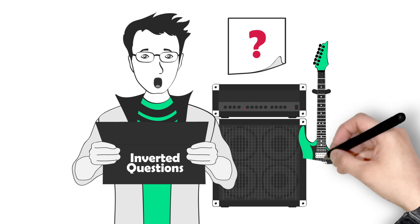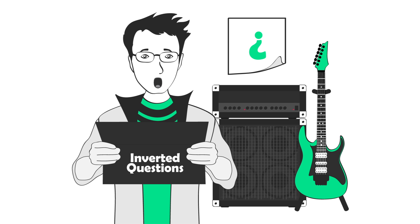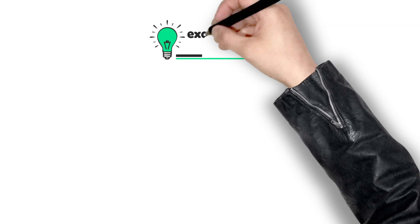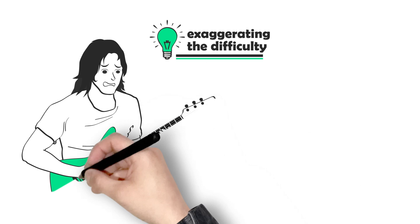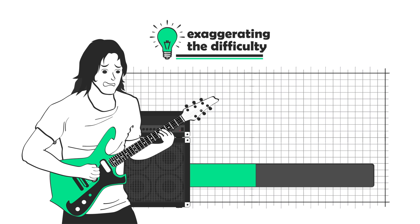Now, is this the only thing you need to do to improve your guitar playing? Heck no. But if you're stuck and have no idea how to solve a problem, inversion helps you get moving in the right direction. Next we have the idea of exaggerating the difficulty, and this is one of my favorite ways to practice. It's closely related to problem inversion because sometimes the trick to solving your guitar playing problems is to make them even harder to fix.